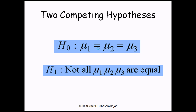This hypothesis says the differences are accidental and that in fact the population means mu1, mu2, and mu3 have remained equal. The other hypothesis says that no, the differences we are observing in sample means are not accidental — they represent the fact that the mean of the populations have changed as a result of the treatments, and that is the reason we see differences in sample means.